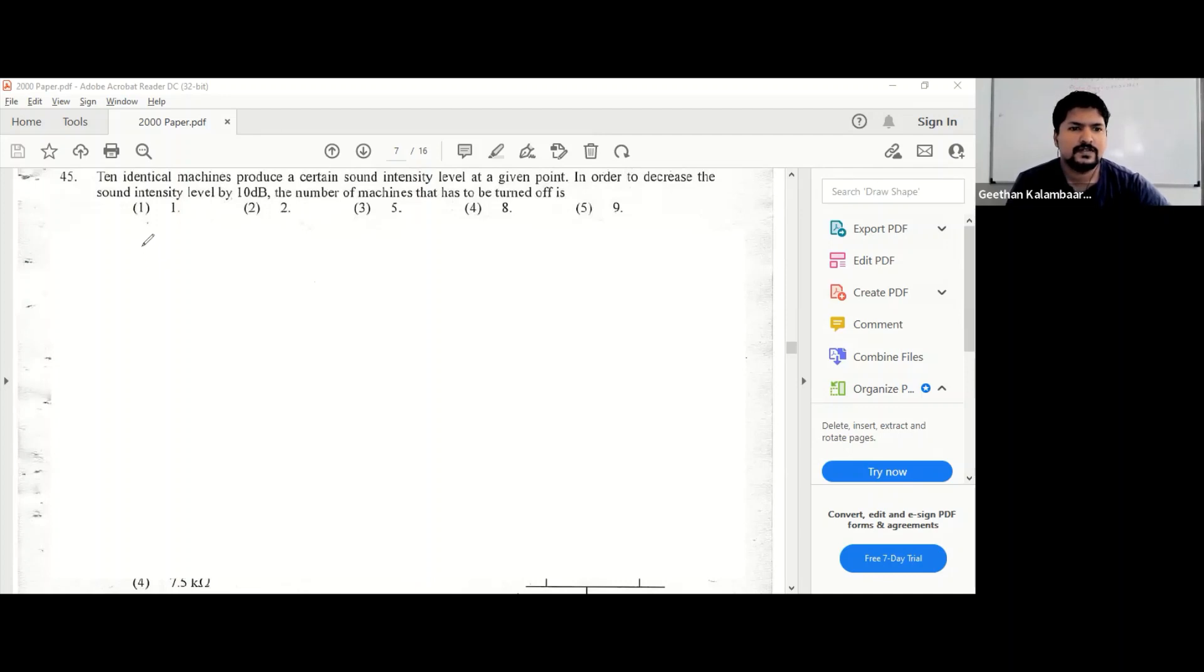The equation for sound intensity level is beta equals 10 log I over I₀, where I is the intensity divided by I₀, the threshold intensity or threshold of hearing.